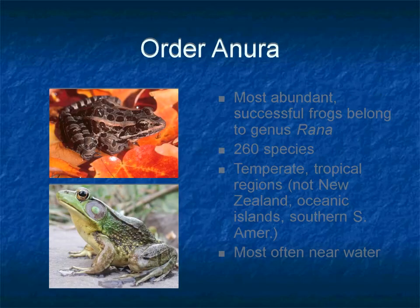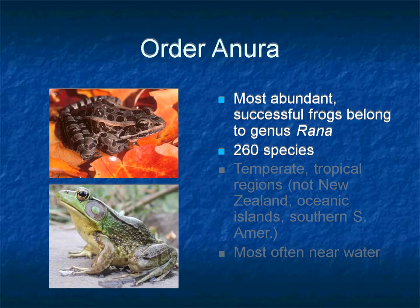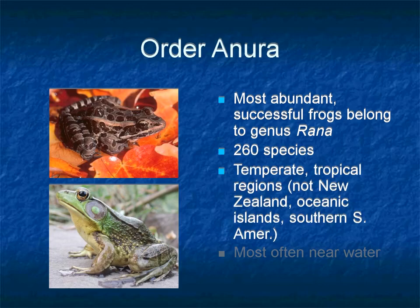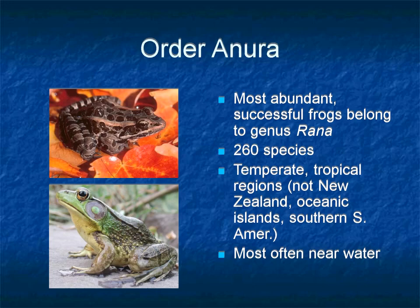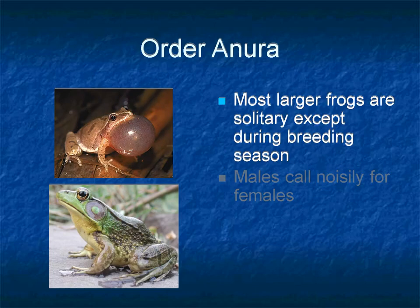The most familiar frog species belong to family Ranidae. Species of genus Rana are the most successful and abundant frogs — you might remember Rana tigrina from FSC. This genus has approximately 260 species and can be found throughout the temperate and tropical regions of the world, except New Zealand, oceanic islands, and southern South America. They usually live near water, but some species like the wood frog spend most of their time on the damp forest floor.